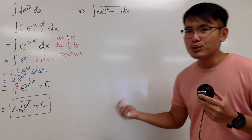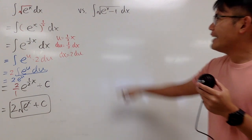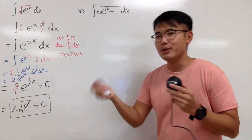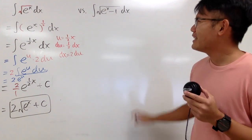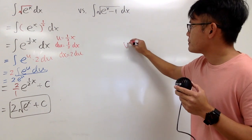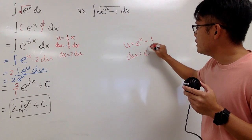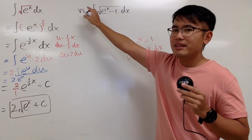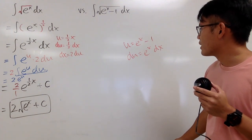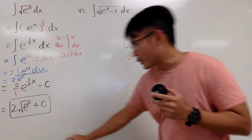Now let's take a look at the second integral. I cannot really use the 1/2 power because the inside is e to the x minus 1. If I let u equal to e to the x minus 1, then du equals e to the x dx, but I don't have any e to the x on the outside to help me out. So that substitution won't work out nicely. Let me show you what we can do instead.